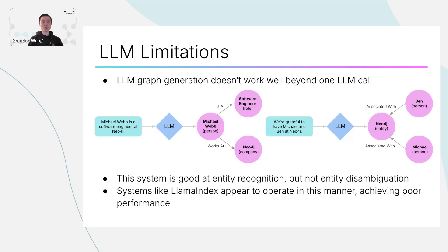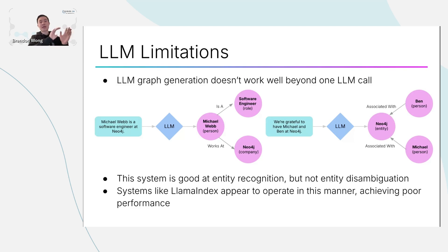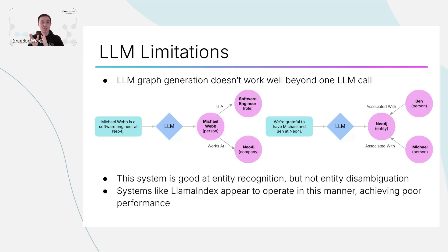But the problem is LLM graph generation doesn't work well beyond one LLM call, because if you call the LLM once and then call it again, it doesn't have any concept at all of what happened in the past — it's an entirely separate instance. For example, let's say a sentence in one LLM call says 'Michael Webb is a software engineer at Neo4j.' The LLM might output that Michael Webb is a person who works at Neo4j. But then a sentence at the very end of that document says 'we're grateful to have Michael and Ben at Neo4j.' That LLM doesn't have the greater context of the whole document.